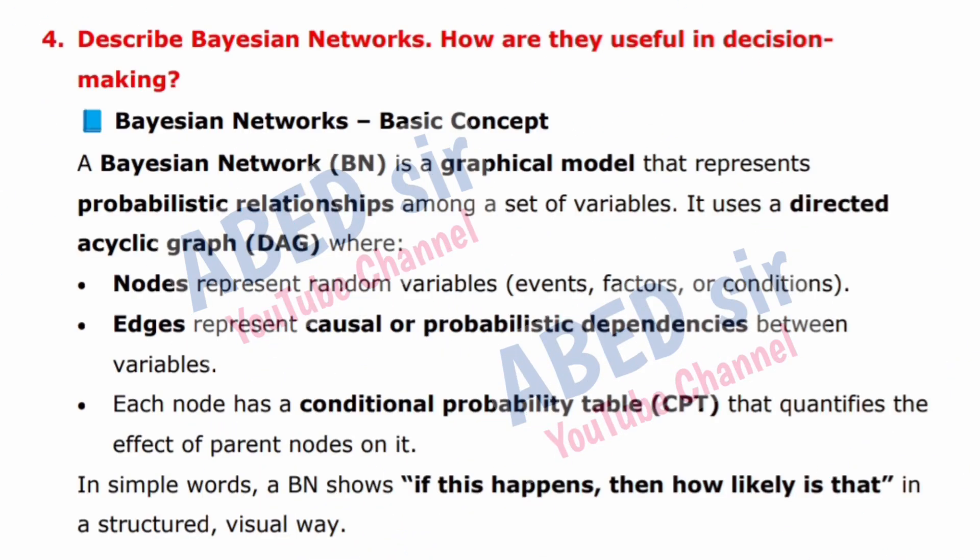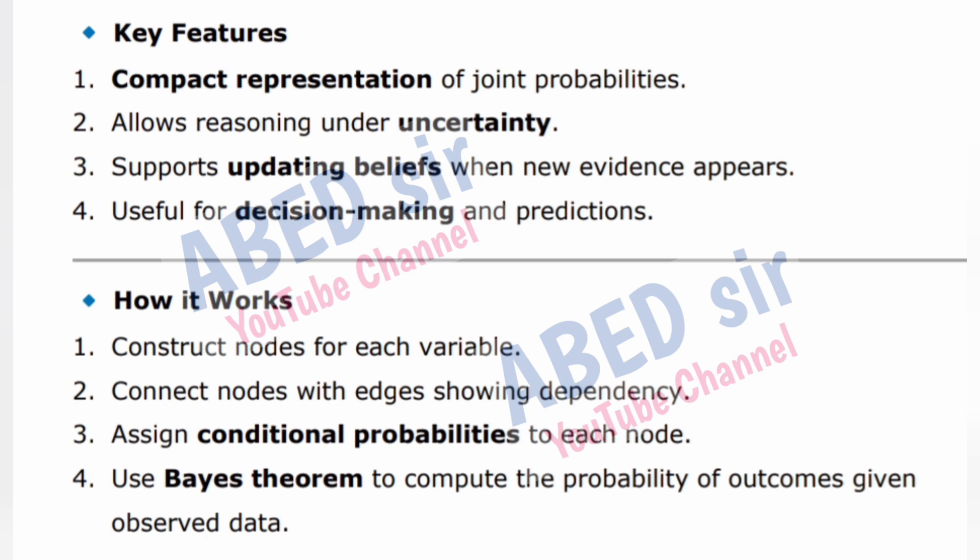Next important long question is 4: Describe Bayesian networks. How are they useful in decision making? A Bayesian network (BN) is a graphical model that represents probabilistic relationships among a set of variables. It uses a directed acyclic graph (DAG) where nodes represent random variables, events, factors, or conditions, and edges represent causal or probabilistic dependencies between variables. Each node has a conditional probability table (CPT) that quantifies the effect of parent nodes on it. In simple words, a BN shows: if this happens, then how likely is that — in a structured, visual way.